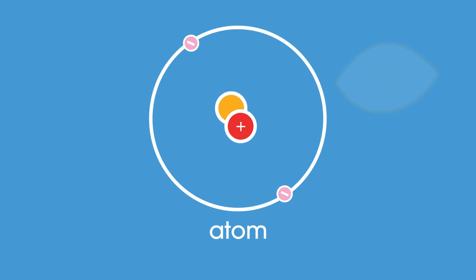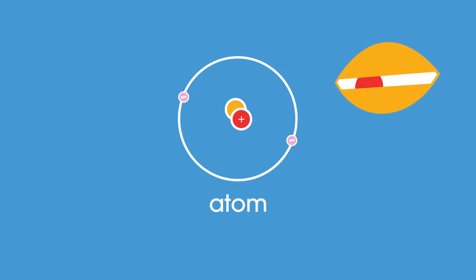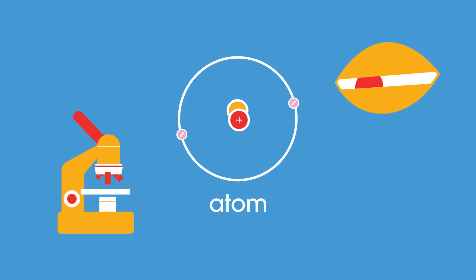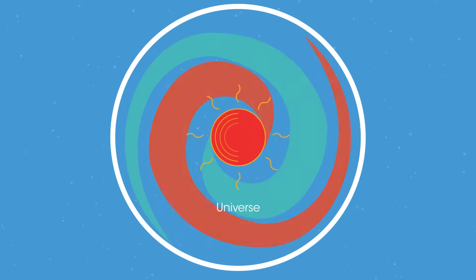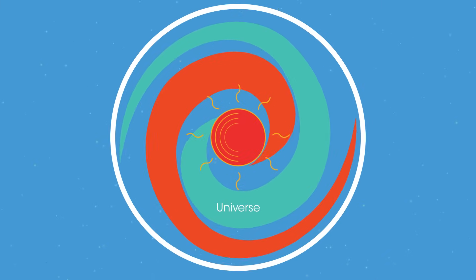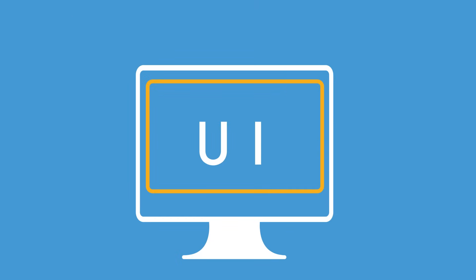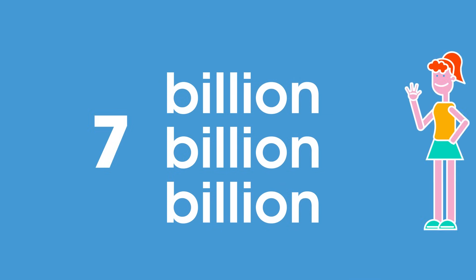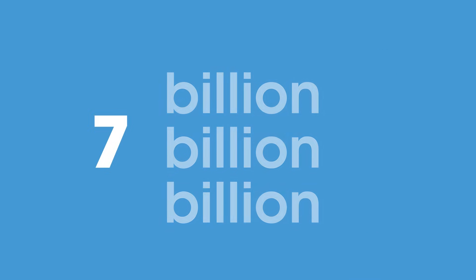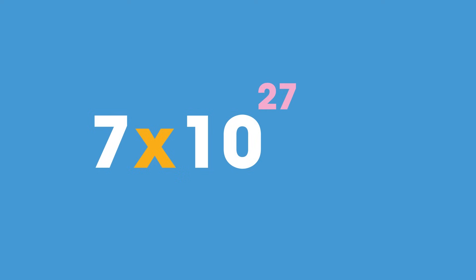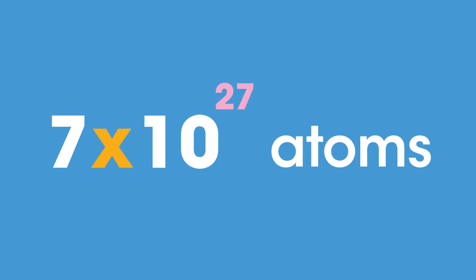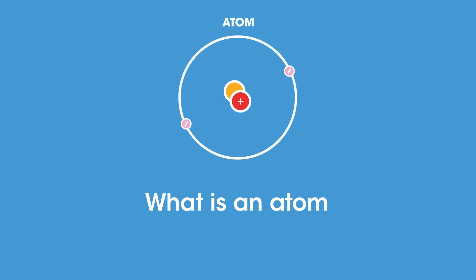Atoms are tiny particles that are so small they're not possible to see with the naked eye — they're only barely possible to make out with the most powerful microscopes. Everything that exists in our universe is made up of atoms, including you, me, and the device you're watching this on. In fact, there are about seven billion billion billion atoms in your body alone, which is seven times ten to the power of 27 atoms. In this video, we are going to look at what atoms are made of, the mass and size of atoms, and the arrangement of electrons in an atom.